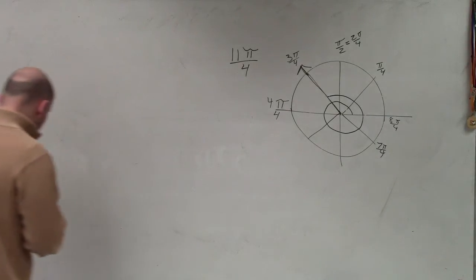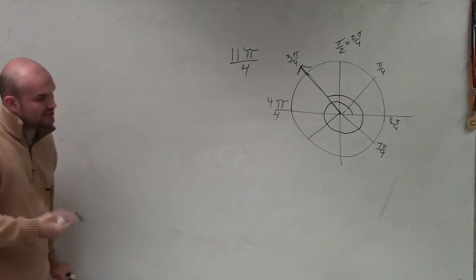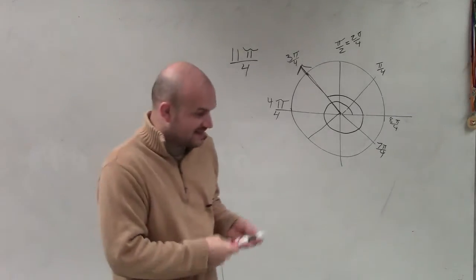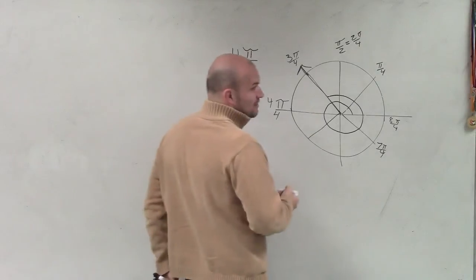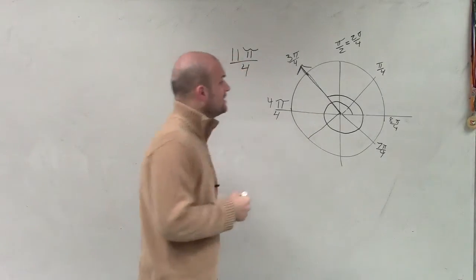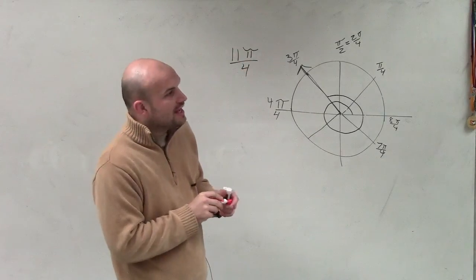Remember, determining coterminal angles is to find the positive and the negative value for an angle that's going to have the exact same measurement. So two angles that I'm going to draw in red, they're going to have the exact same initial and terminal side.